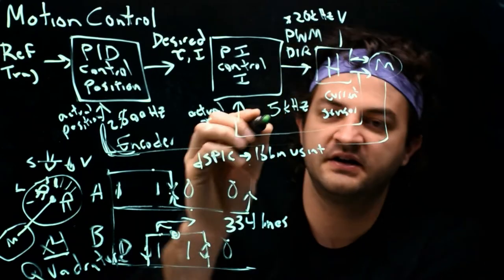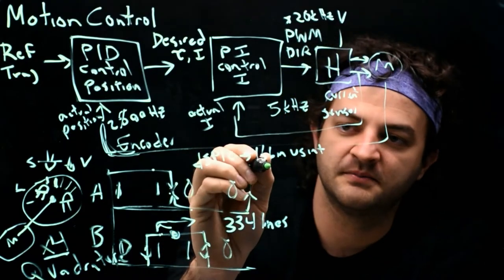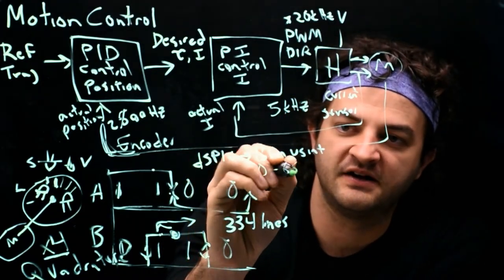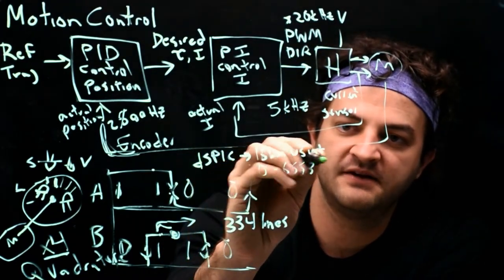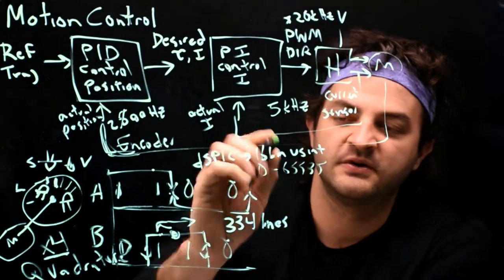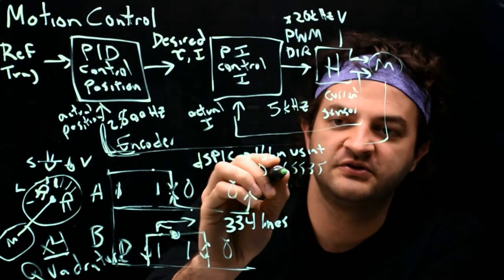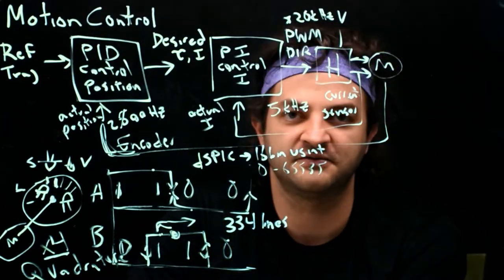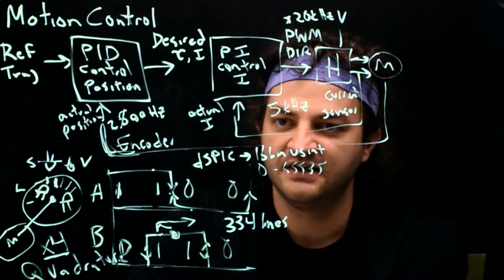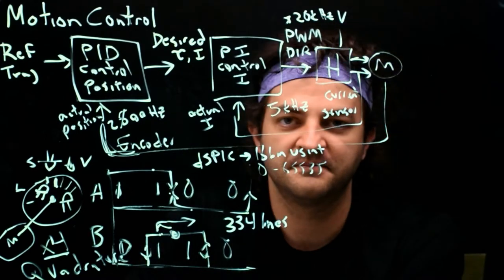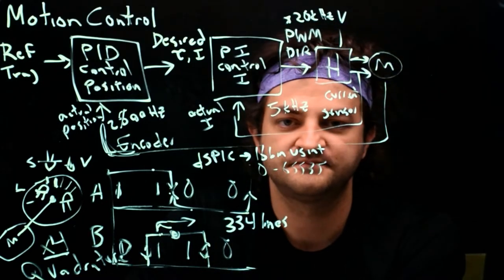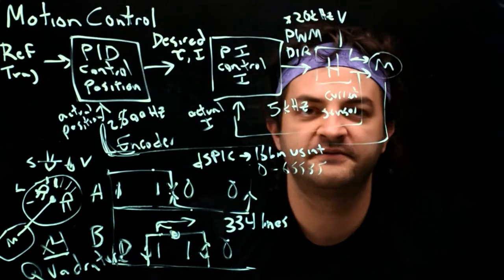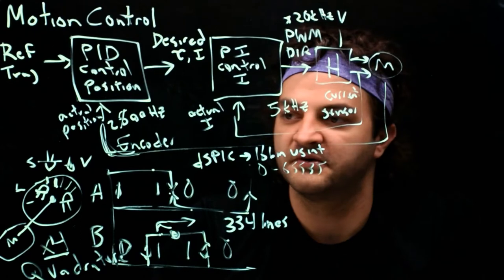When it first turns on, it stores a number — that's a value between 0 and 65,535. It starts at exactly half of 65,535 and counts up and down from there. That was figuring out the position of the motor: the motor has an encoder on the back, and we use four-times quadrature decoding to get that number into the PIC.